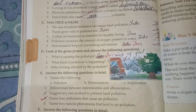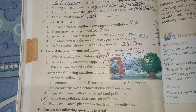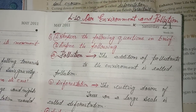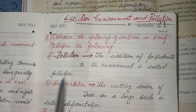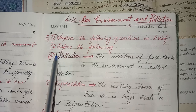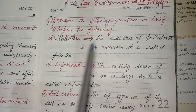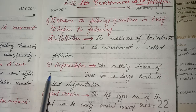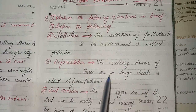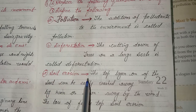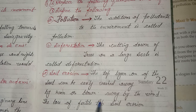I have done some questions in the book. After that, some questions solved in the notebook. Answer the following questions in brief. First, define the following. A. Pollution: The addition of pollutants to the environment is called pollution. B. Deforestation: The cutting down of trees on a large scale is called deforestation. C. Soil erosion: The top layer of soil can be easily washed away by rain or blown away by wind. The loss of fertile top soil is called soil erosion.